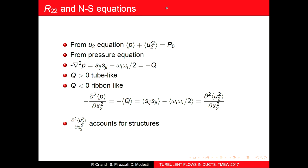Turbulence kinetic energy is composed of three components: u-prime, v-prime, and w-prime. I am particularly interested in v-prime, a quantity that has rarely been analyzed, mainly because it is very difficult or impossible to measure experimentally. Importantly, this wall-normal stress is the only normal stress entering the momentum equation.